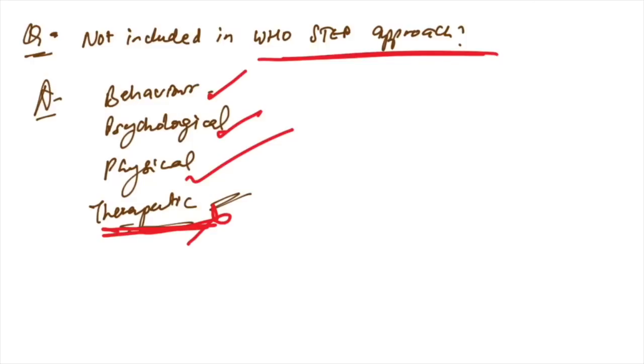Behavior, lifestyle, and substance use, exercise, diet are inclusive in the physical. Biochemical measurements are all included, but therapeutics are not included in WHO step approach.